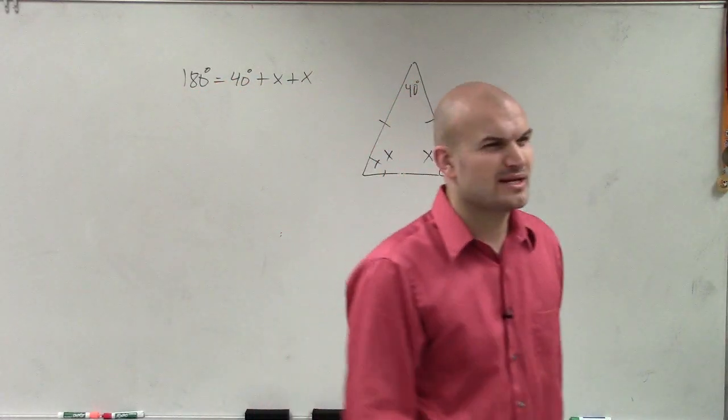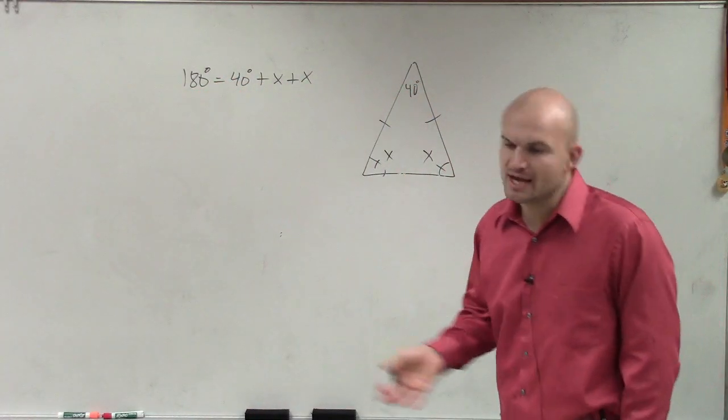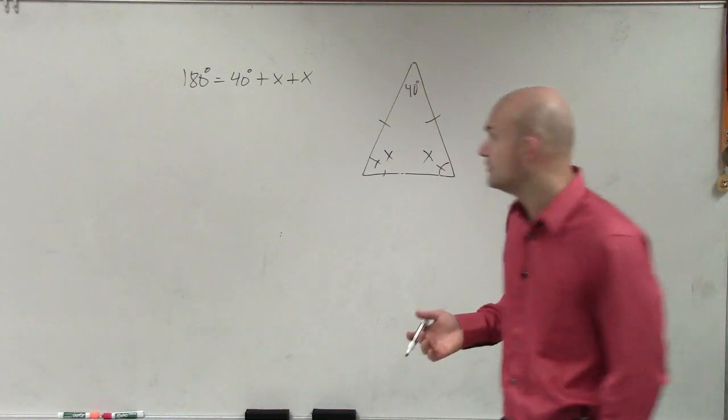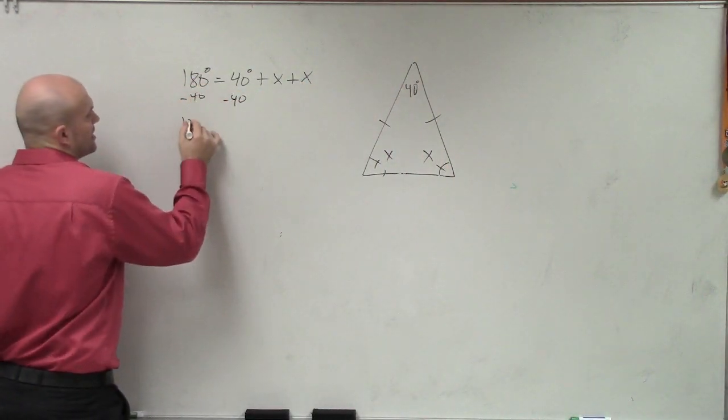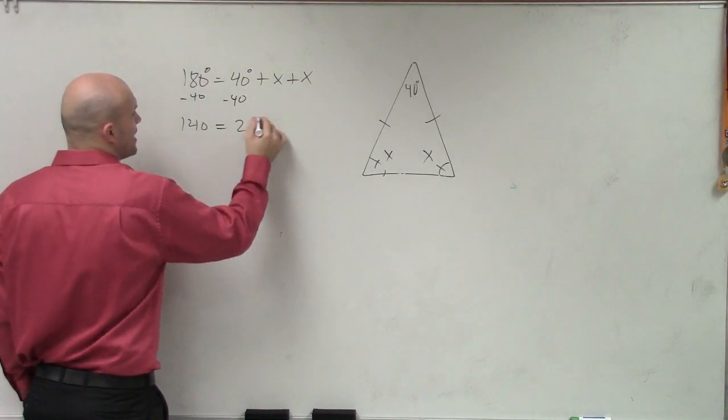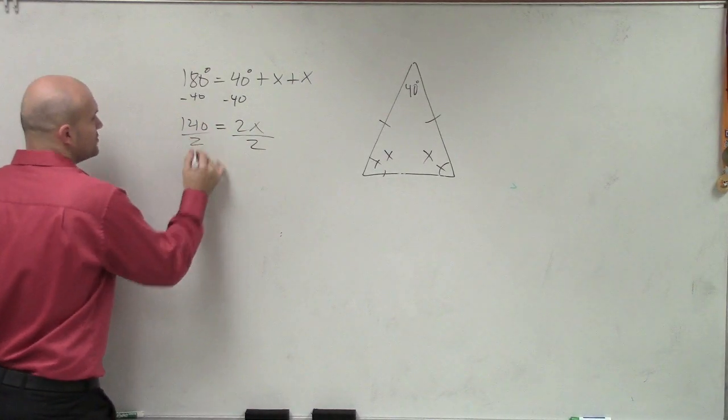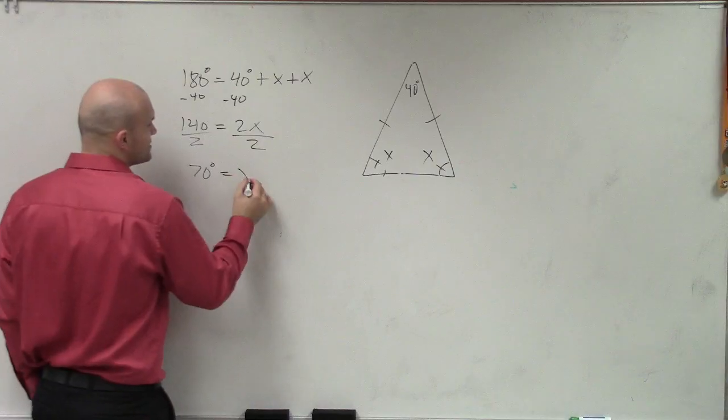Does that make sense, right? Because the sum of all the angles in a triangle add up to 180. So therefore, I'll subtract 40. And I'll say 140 equals 2x. Divide by 2, divide by 2. 70 degrees equals x.